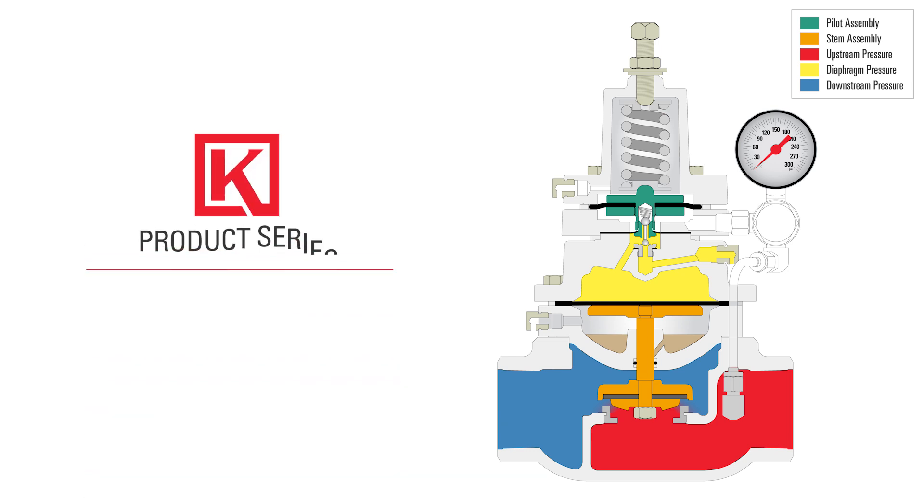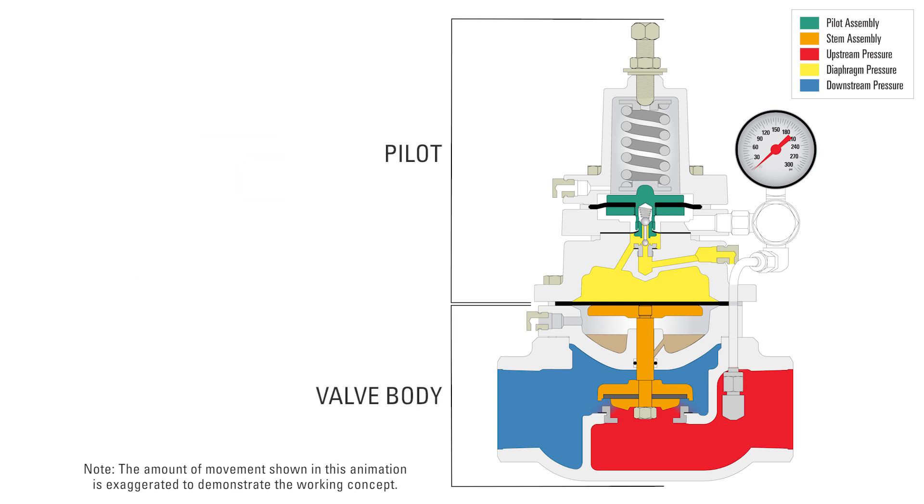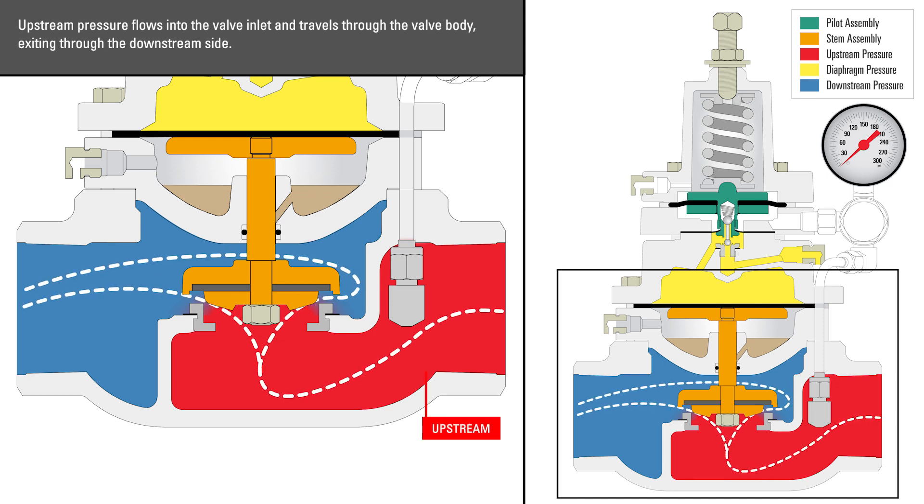The Kimray back pressure regulator monitors and controls upstream pressure. It is an integrated valve because the pilot and the valve are one piece. Upstream pressure flows into the valve inlet and travels through the valve body, exiting through the downstream side.